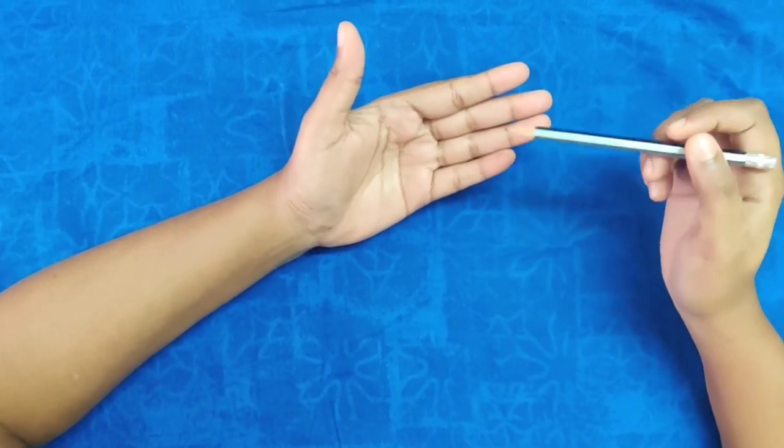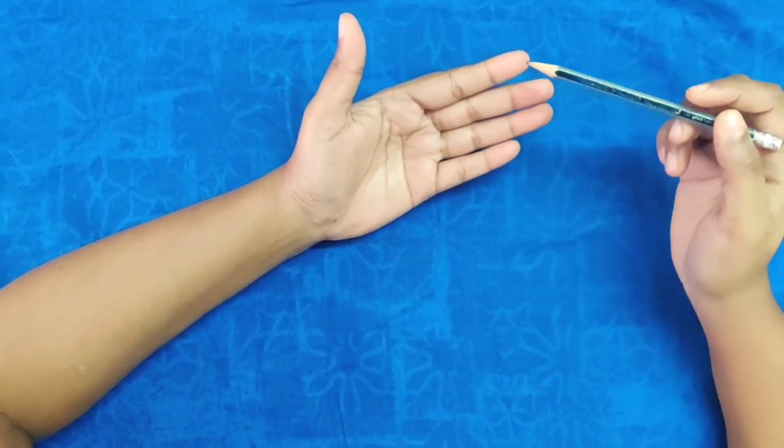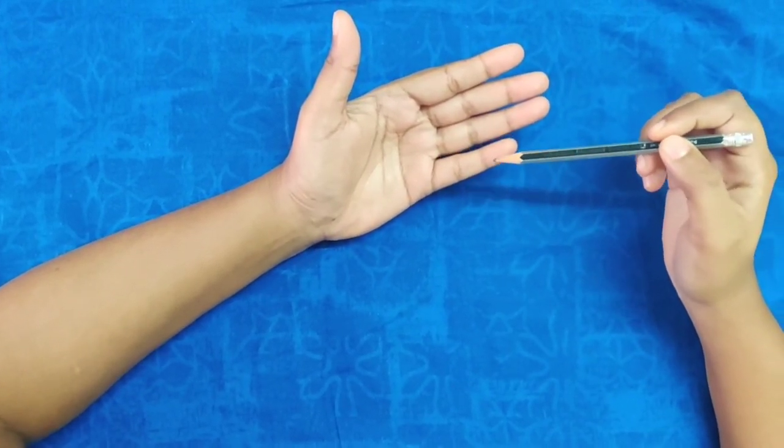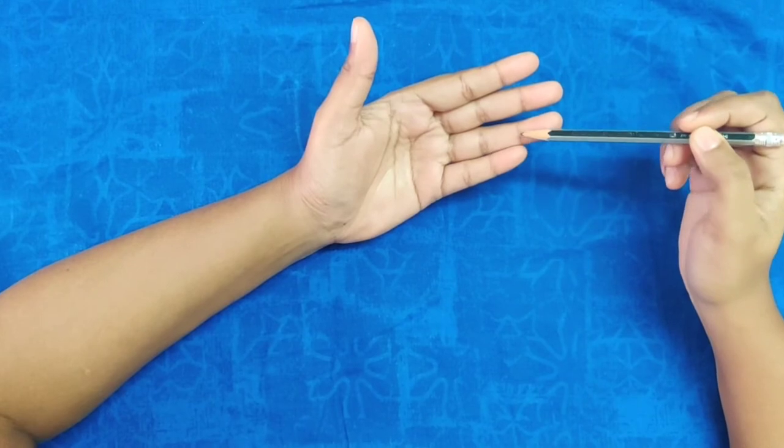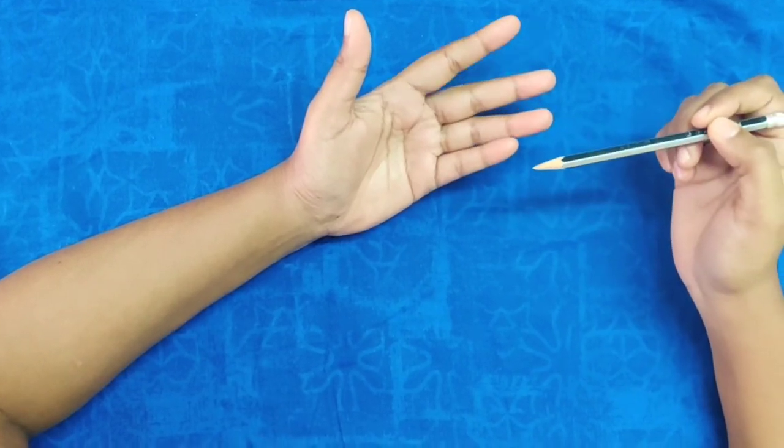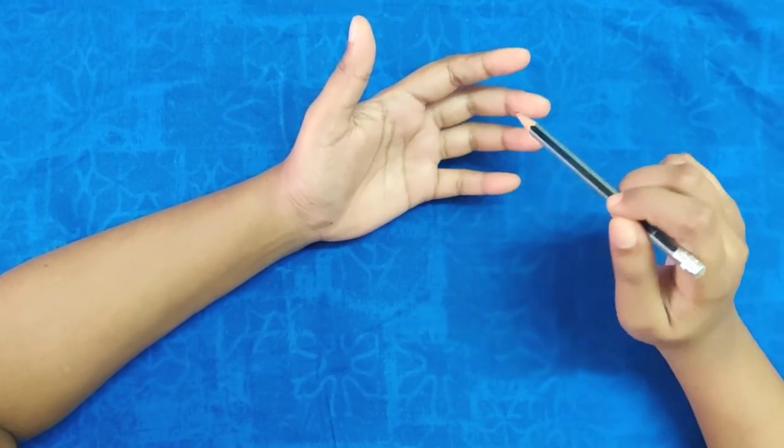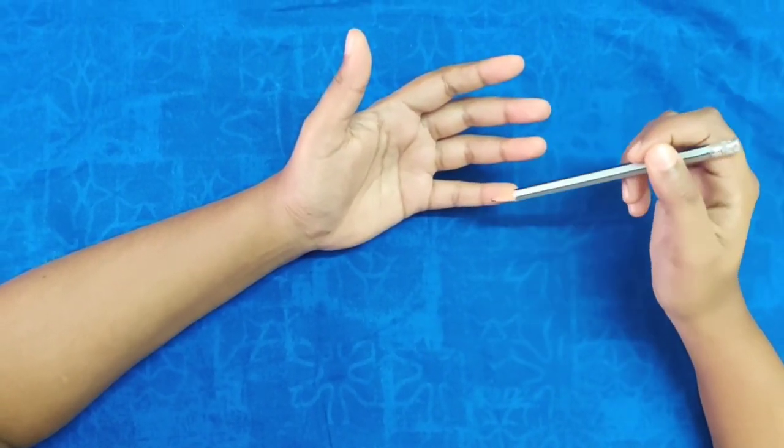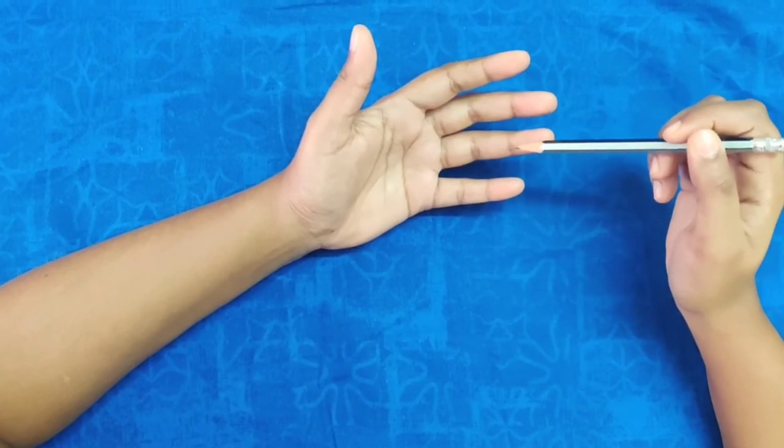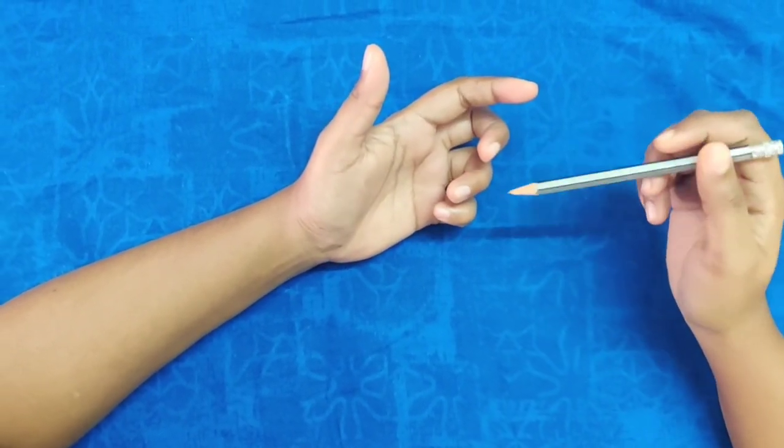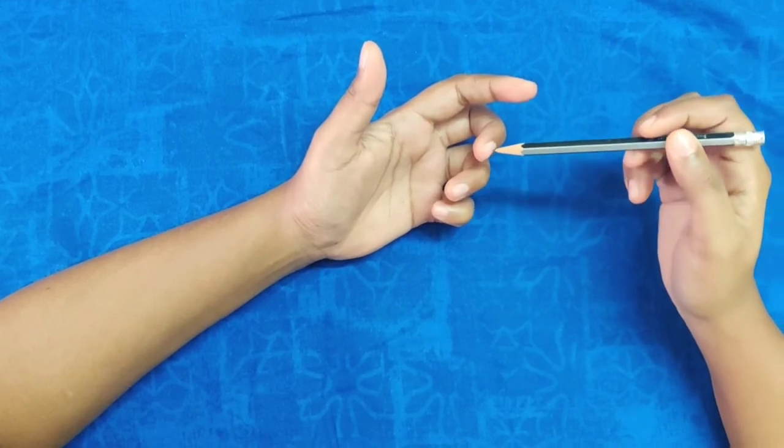In the sign of benediction, the flexor digitorum profundus functions in the little and ring fingers because it is supplied by the ulnar nerve, so the patient is able to flex these fingers. The FDP of the middle finger shares a common belly with the FDP of the ring and little fingers, so some flexion will occur at the middle finger also.